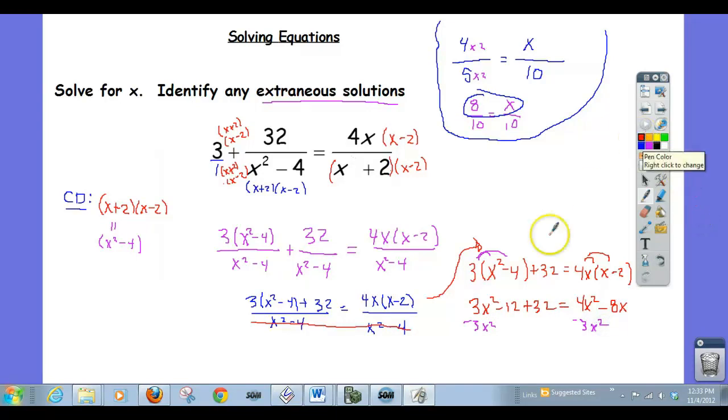And this is now negative 12 plus 32 is just 20. So that's 20 equal to x squared minus 8x. And now let's subtract 20 from both sides. So I get 0 equals x squared minus 8x minus 20.